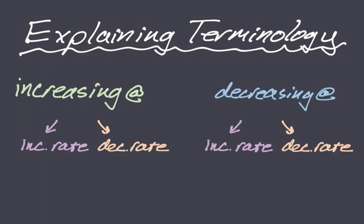In this video we are going to be explaining some terminology — specifically what it means for a function to be increasing at an increasing rate versus increasing at a decreasing rate, or decreasing at an increasing rate versus decreasing at a decreasing rate. A lot of people struggle with this idea. We're going to look at some sample solutions and see if we can justify them, which should clear it up.